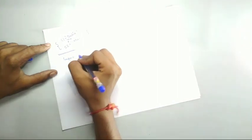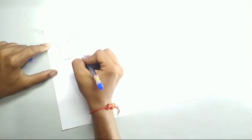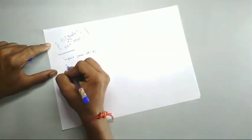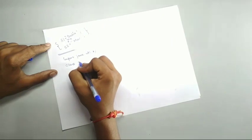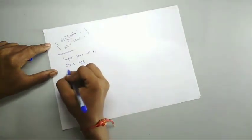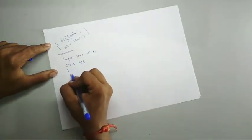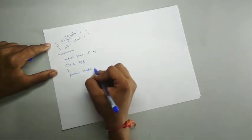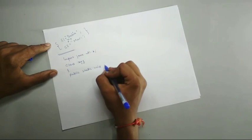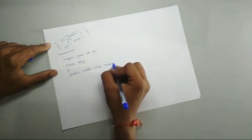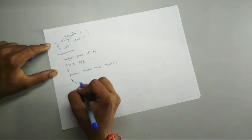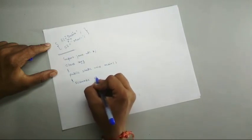First of all we will write the import. We can say import Java util asterisk, we are using the scanner class. Then class, we can say xyz. Then we will open the bracket, main method public static void and main. This is the part where actual program execution starts.